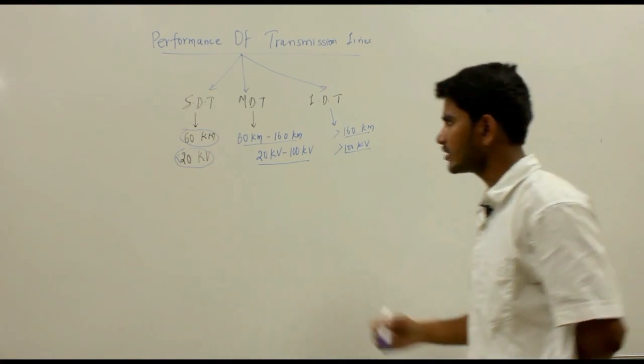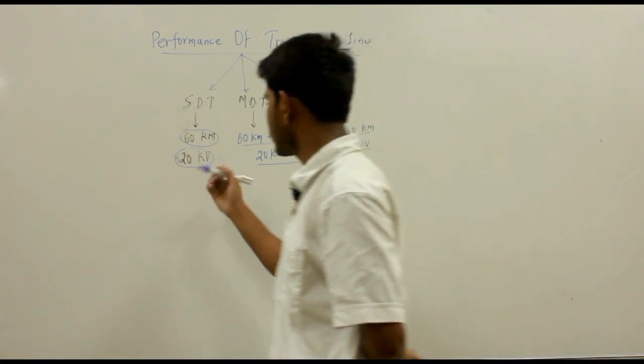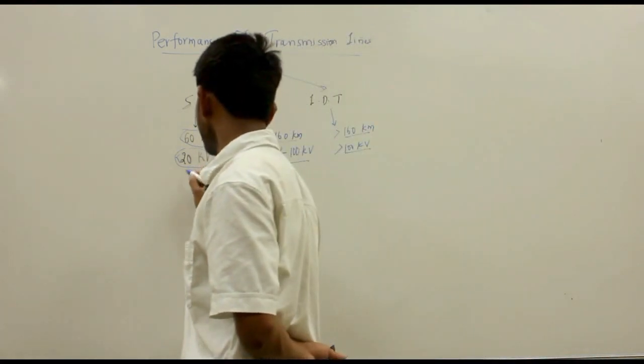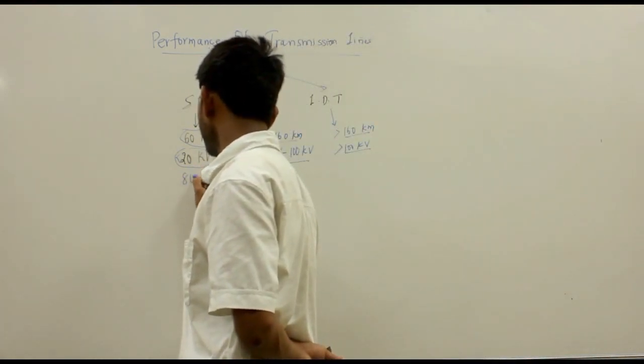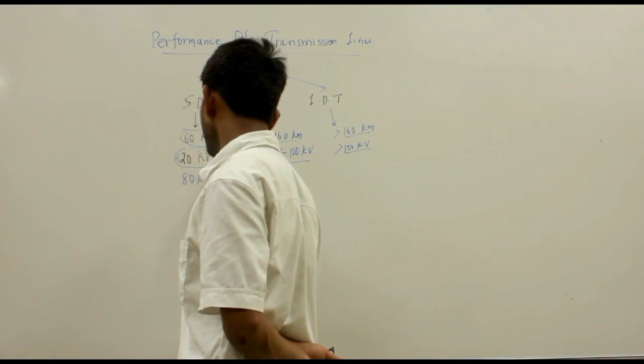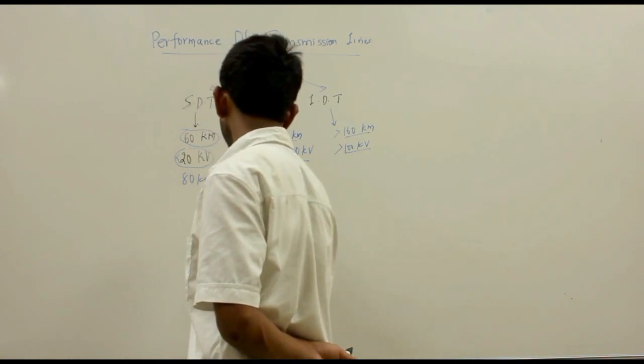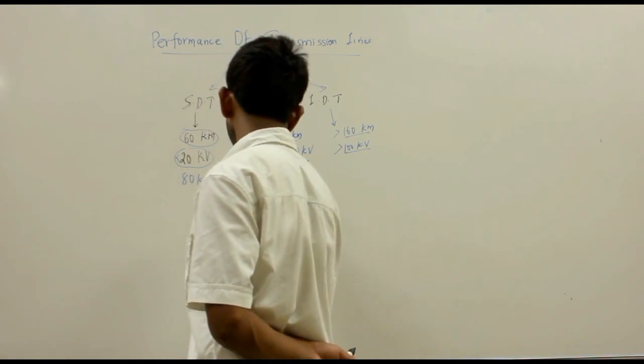In some books it is written that the short distance transmission line length is 80 km, and the medium distance is 80 to 250 km.